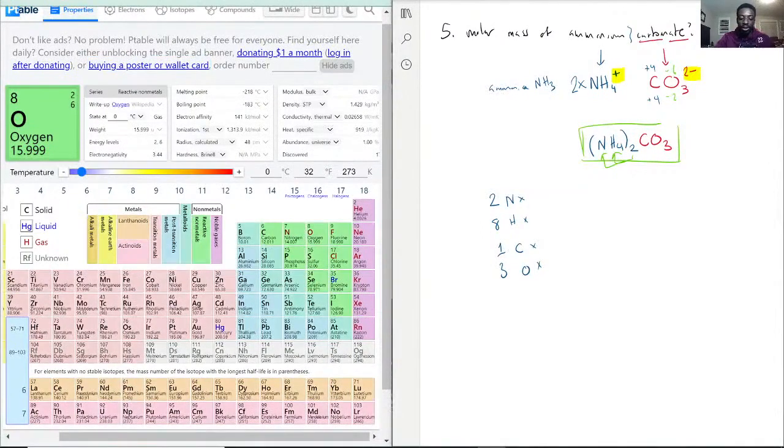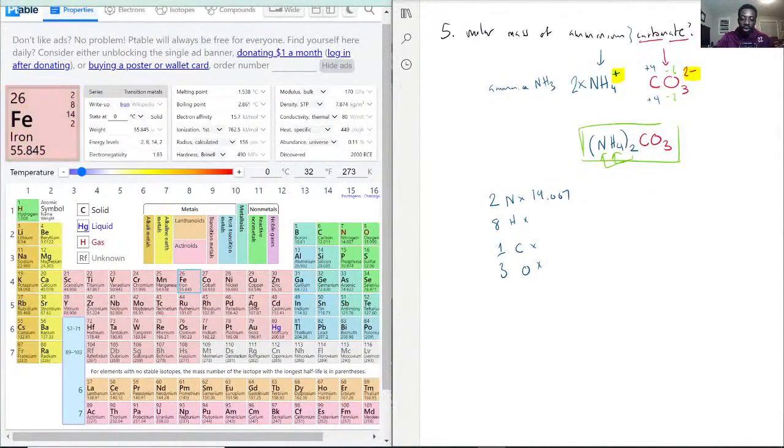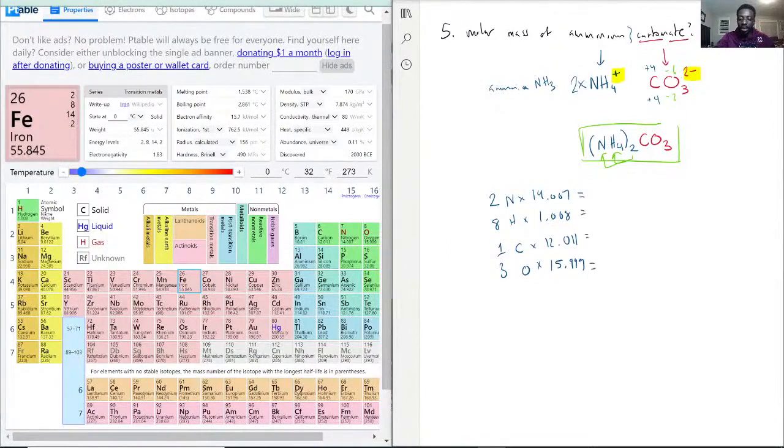And we go to the periodic table to get all the values we need. So we have nitrogen is 14.007, hydrogen is 1.008, carbon is 12.011, and oxygen is 15.999. Then we make these equal to whatever math we need.